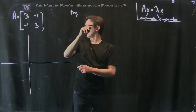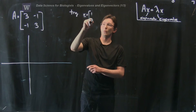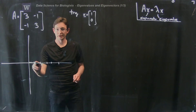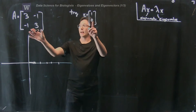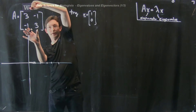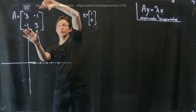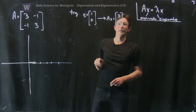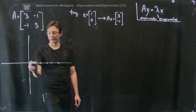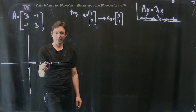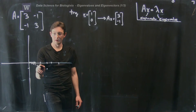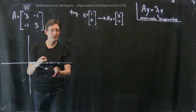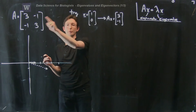Let's try the vector x = [1, 0], a unit vector in the x direction. If we multiply A by this, we get 3 times 1 plus 0 times negative 1 equals 3, and on the bottom negative 1. So A*x = [3, -1]. That output vector goes 3 in the x direction and minus 1 in the y direction. Notice that the input vector and output vector point in different directions — they're close, but they're different.